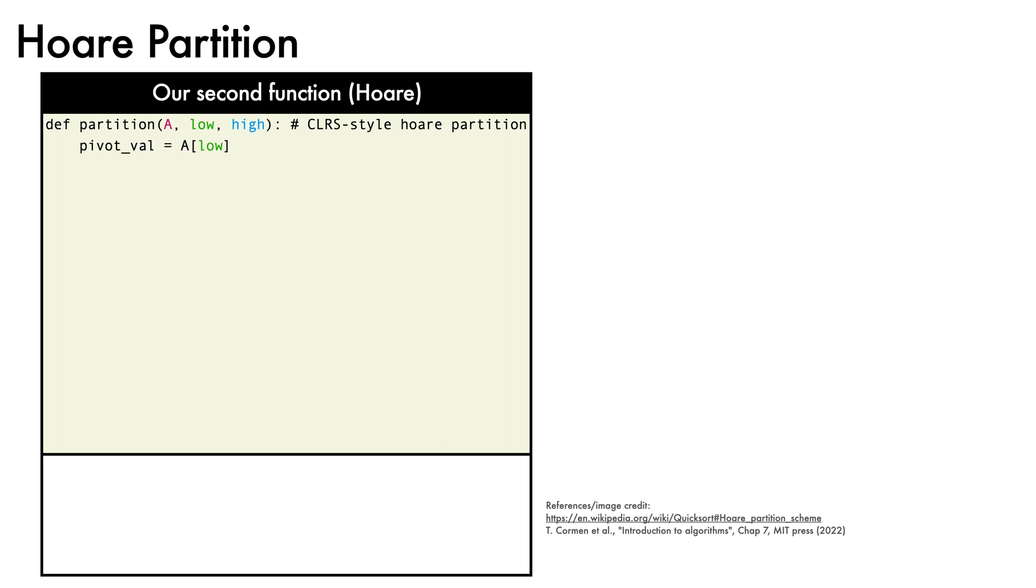We initialize counter variables i and j to start outside the two ends of the array. Now, we enter a while true loop. Here things get a little fruity, since we need to implement a Python version of a repeat until loop. We do this first for i with a while true statement, incrementing i, checking if ai is greater than or equal to the pivot value, then breaking out. We then repeat this construct for j, but this time decrementing j, and checking if aj is less than or equal to the pivot value, then breaking out.